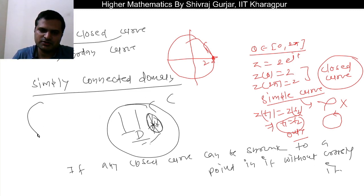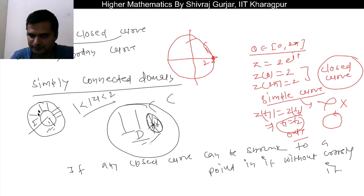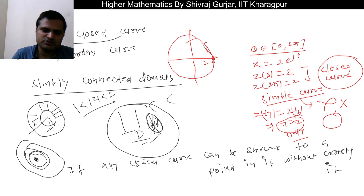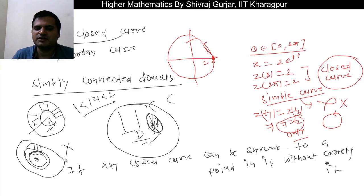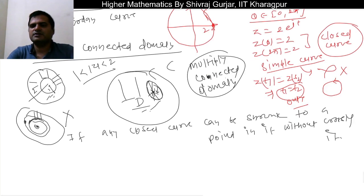For example, consider an annular region between two concentric circles of radii 1 and 2. This domain is not simply connected. If we take a closed curve in this region and try to shrink it to a point, we would have to cross the inner boundary. Since it cannot be shrunk without crossing the boundary, it is not simply connected. A domain that is not simply connected is called a multiply connected domain.